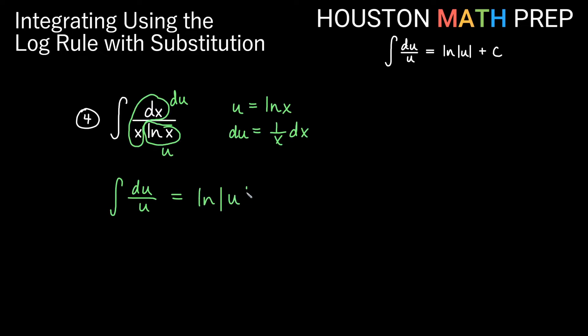So we'll get ln of the absolute value of u plus c, just from our definition. And replacing ln x back in for u, then we actually get ln of the absolute value of ln of x. So we have an ln of ln of x for this one.